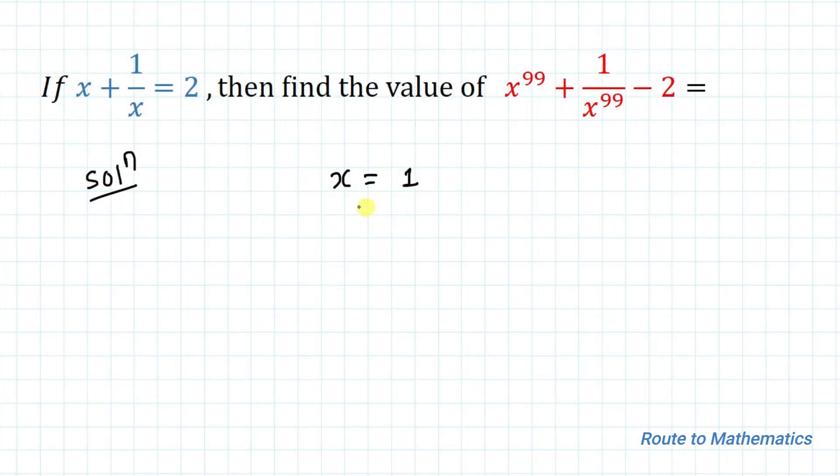We are getting x equals 1. Now we are asked to find the value of x to the power 99 plus 1 by x to the power 99 minus 2. Let's put x equals 1 here.